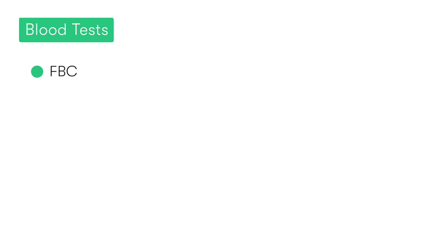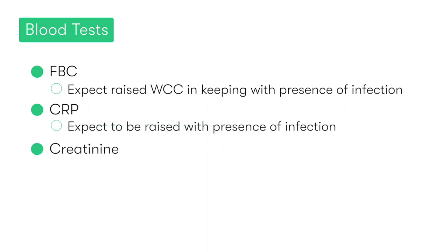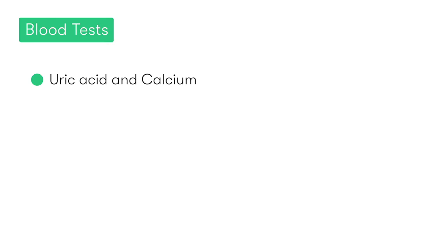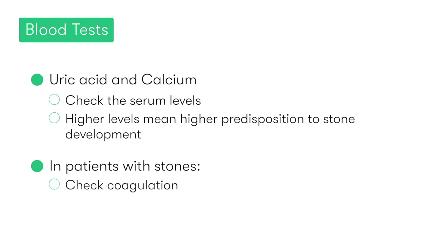Moving on to blood investigations, we should check the patient's full blood count to look for an elevated white cell count, or leukocytosis, which would be in keeping with the presence of infection, as would a raised CRP. We would also want to check the patient's creatinine to assess their renal function, and also look at their electrolyte levels, particularly sodium and potassium. As two of the main constituents of urinary tract stones are uric acid and calcium, it's really important that we check the serum levels of these to identify patients who have higher levels and therefore a higher predisposition to stone development. In patients in whom we intend on undertaking surgical or endoscopic intervention, we should also be checking their coagulation in preparation for these procedures.